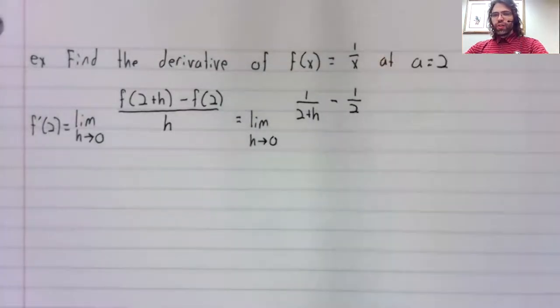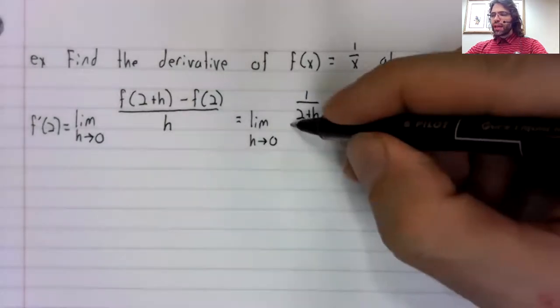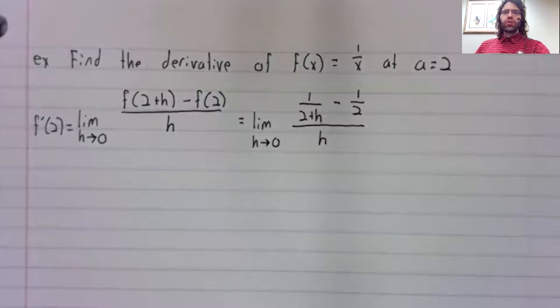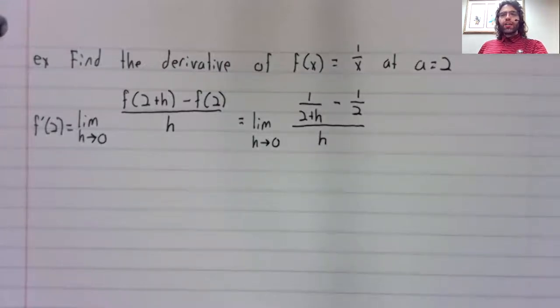f of 2 is one half, and that's all divided by h. And now we have to find a limit.